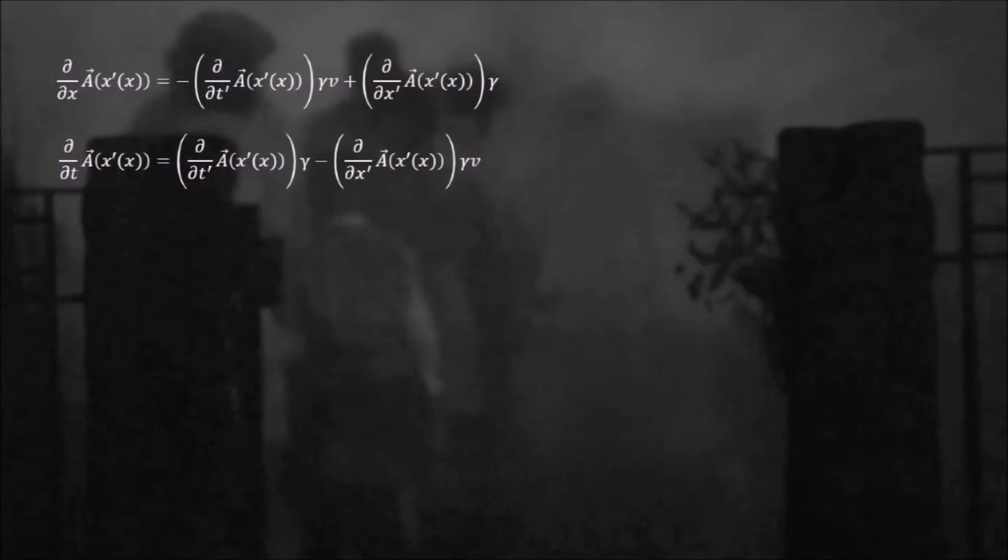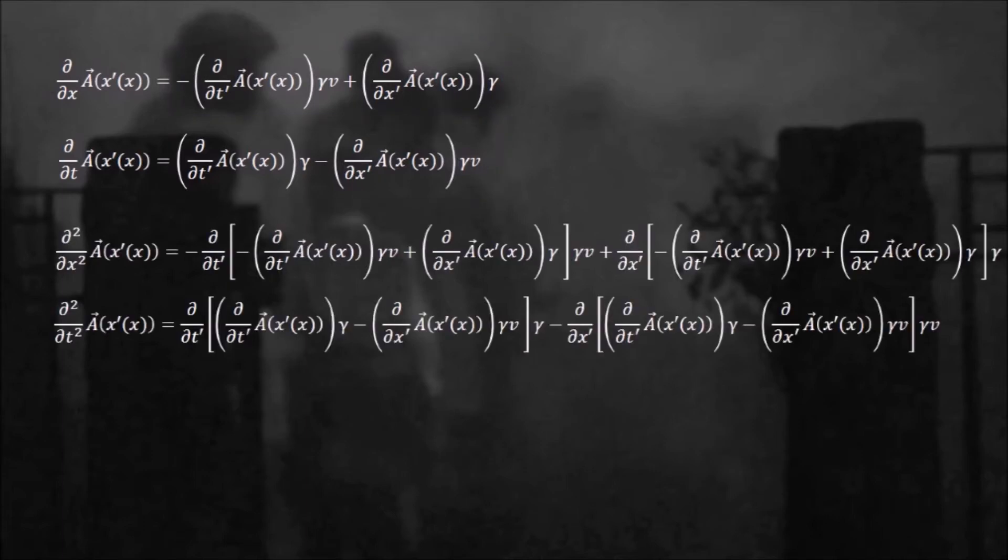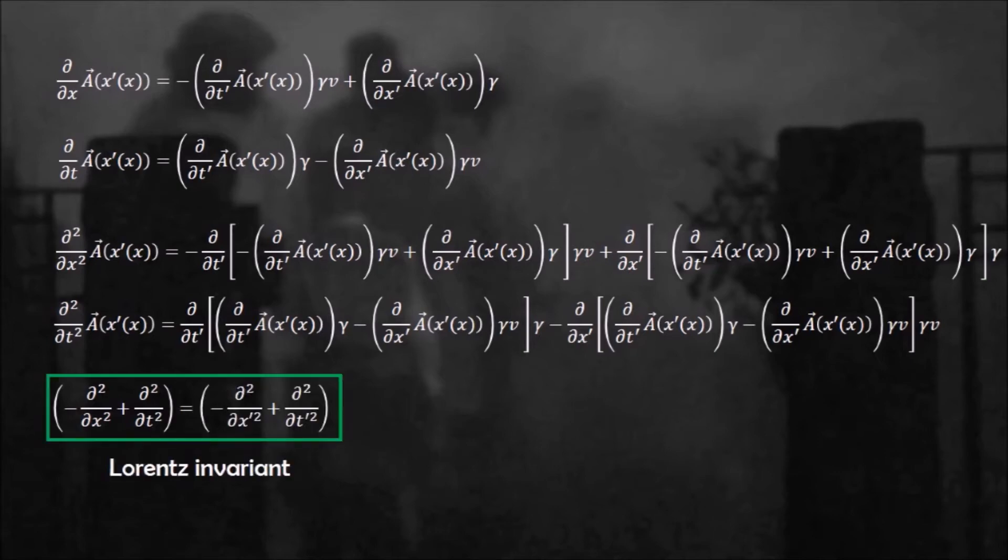To work out the second derivatives, just apply the same procedure as on the previous page, but instead of differentiating A, we differentiate this expression with respect to x and this guy with respect to t. Now take the difference and work out the right hand side. You will find that all these terms will cancel out. So the Lorentz operator is indeed Lorentz invariant.